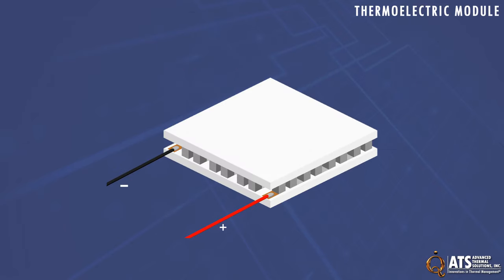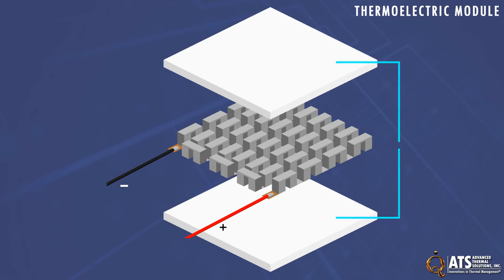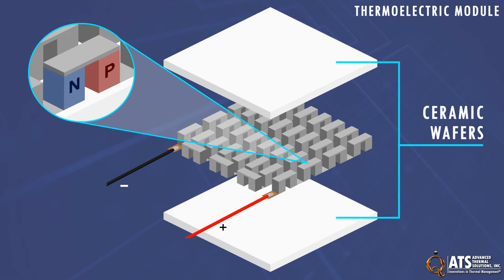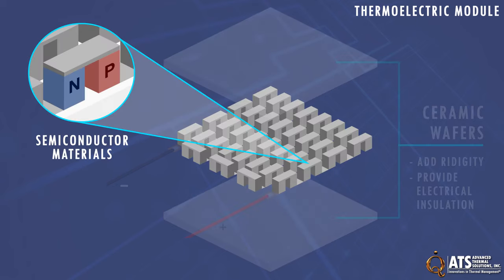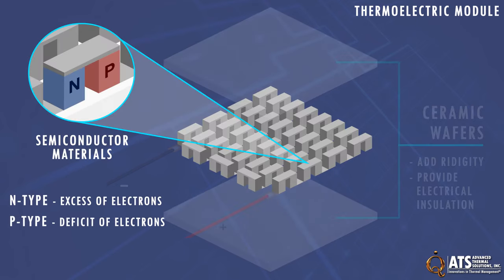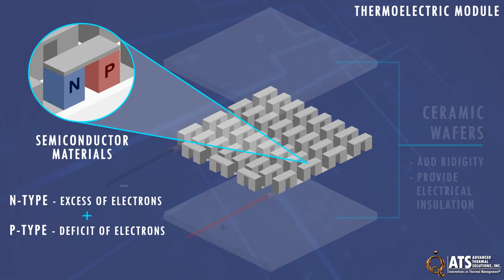A thermoelectric module is manufactured using two thin ceramic wafers with a series of N and P semiconductor materials sandwiched between them. The ceramic wafers add rigidity and provide the necessary electrical insulation for the module. The N-type semiconductors have excess electrons, while the P-type have a deficit of electrons, with one N and one P making up the junction couple that creates the thermoelectric effect.